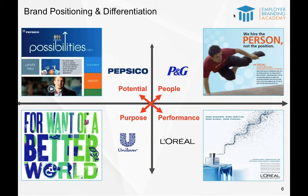For Procter & Gamble, much more focused on the people within the business. The famous line they've used for years — 'We hire the person, not the position' — is really counter to some preconceptions of P&G as being somewhat process-oriented. Actually, it's a very people-oriented business full of great characters, and they look for character in people. They look for people who thrive on challenges and enjoy working with others. That whole positioning was based on the people within the organization.